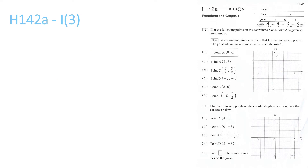Point D. x is negative 2 and y is negative 1. x negative 2 is here because it's negative — negative 2 is there, and negative 1 is there. Those meet at this point here. So this would be your point, and you'll label that D.